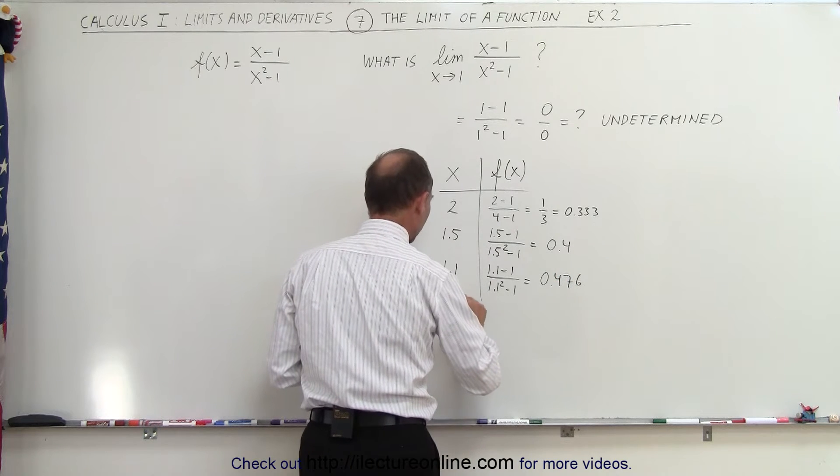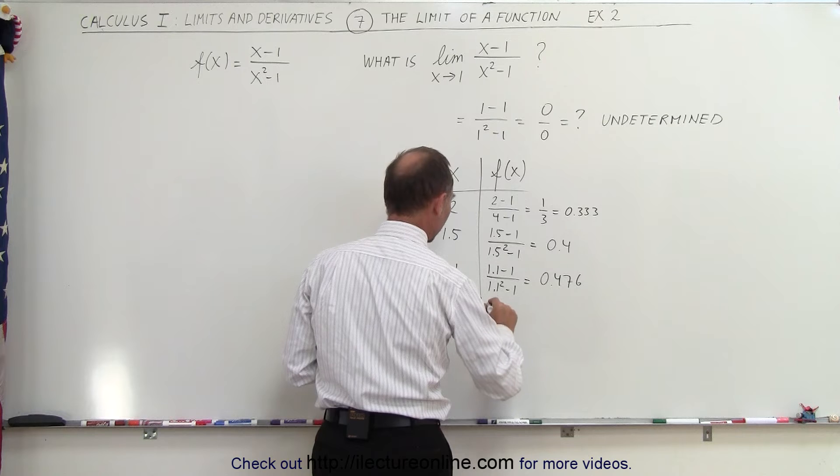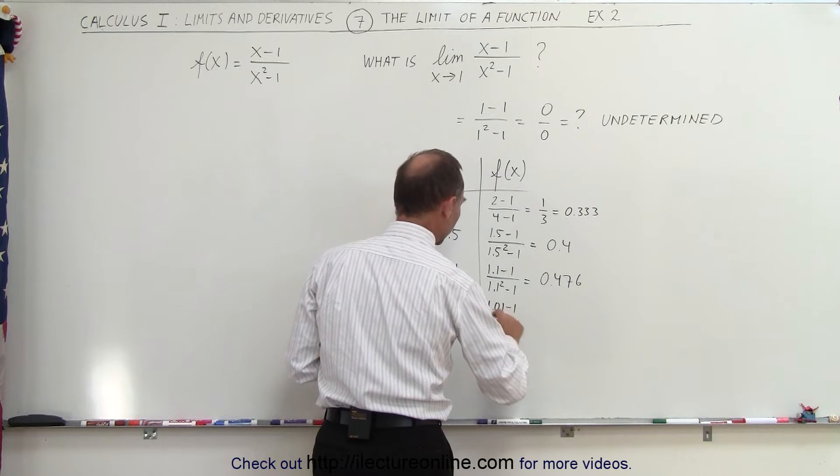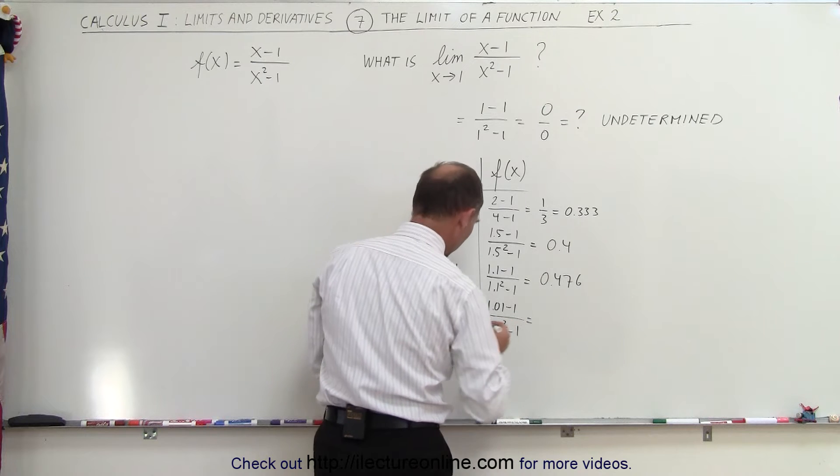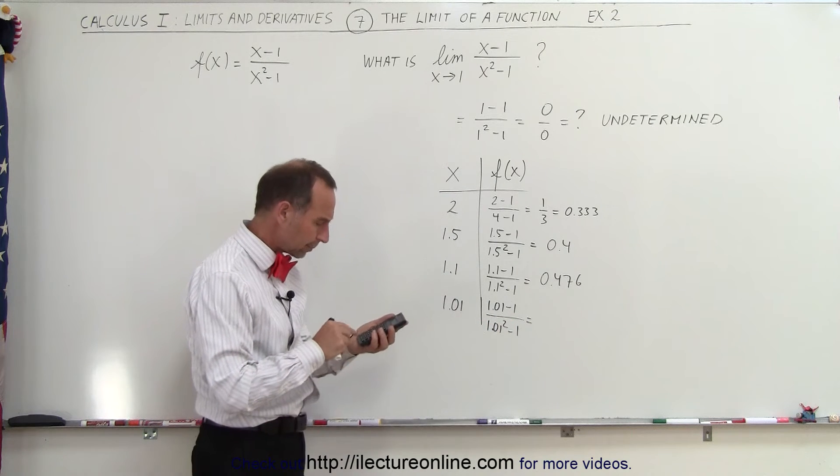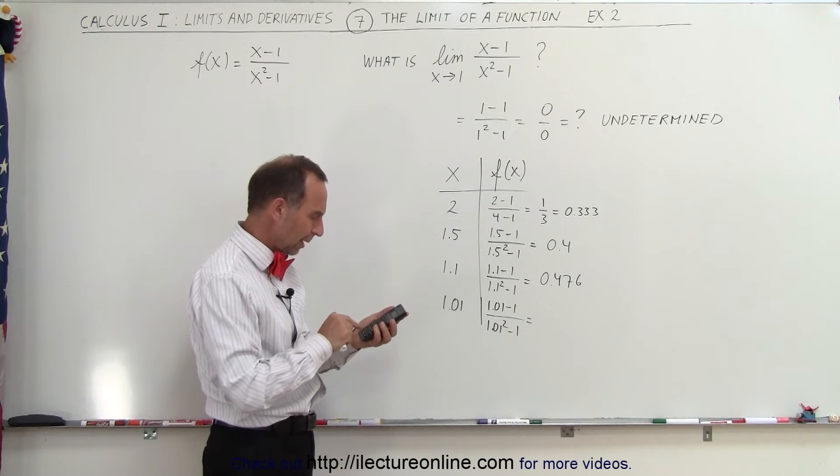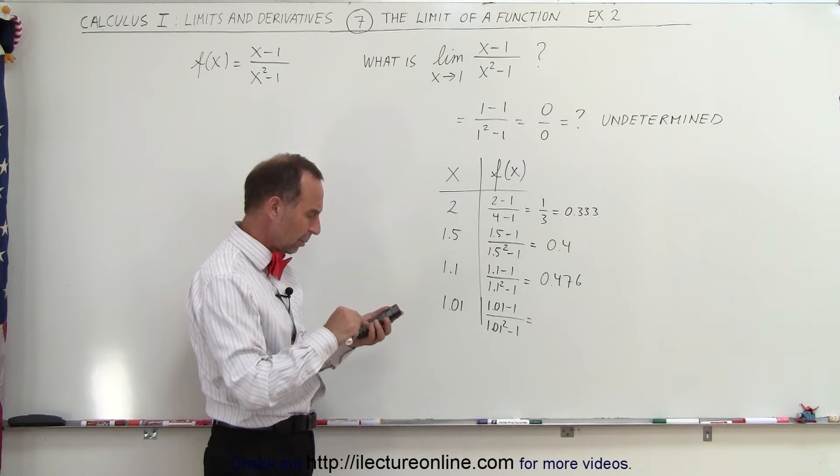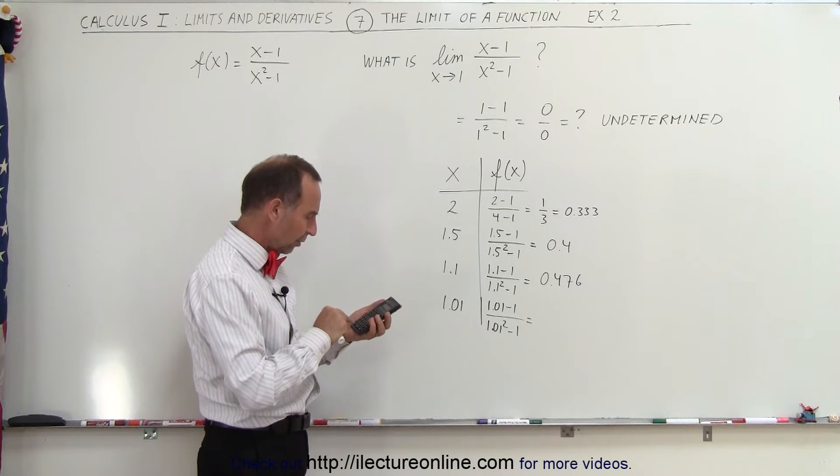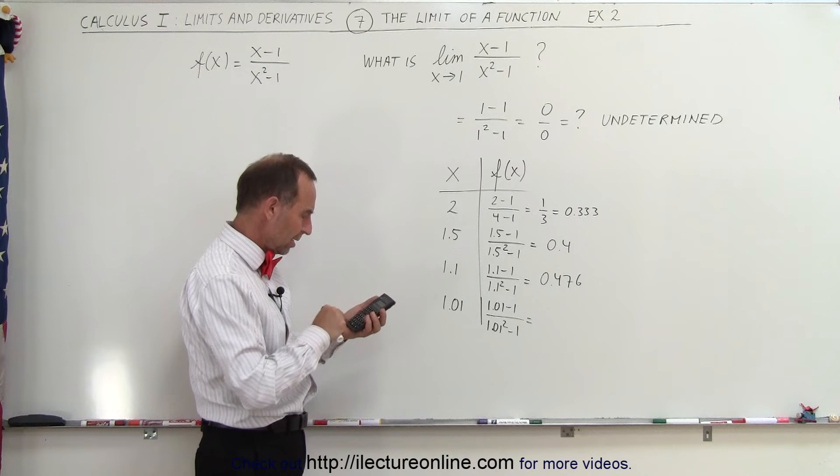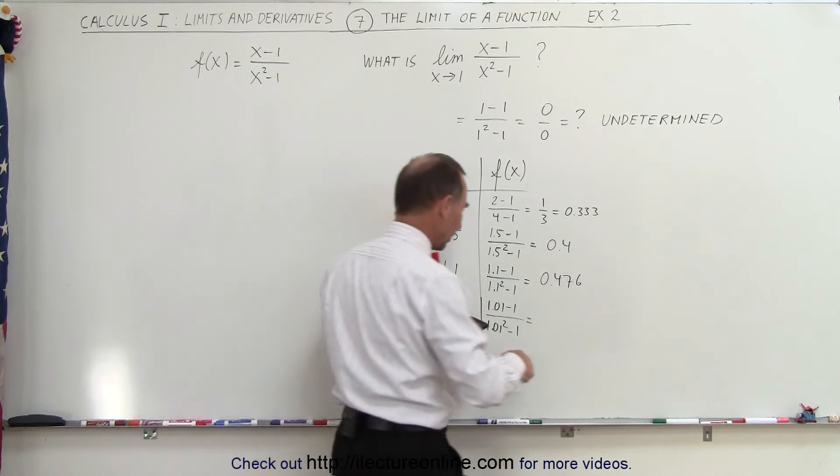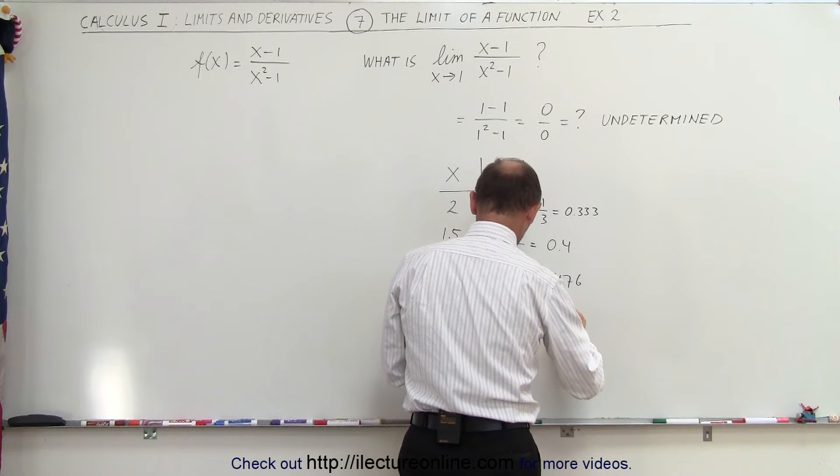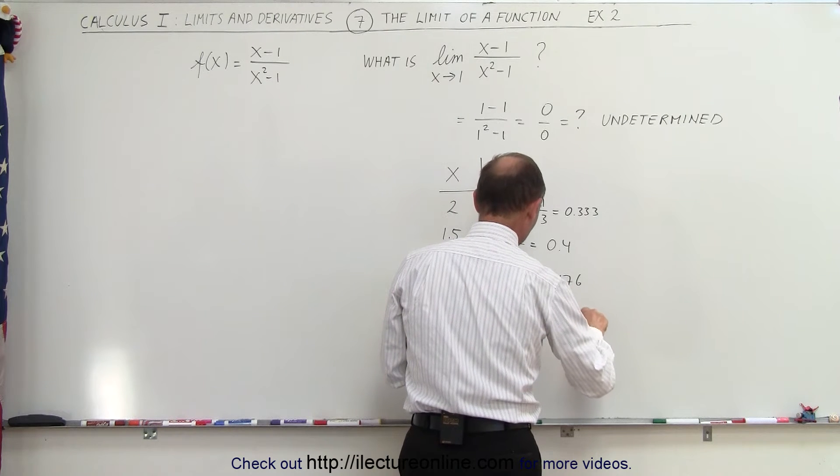How about 1.01? That means f of x would be 1.01 minus 1 divided by 1.01 squared minus 1. And now let's see what we get this time. So 0.01 divided by 1.01 squared, let me try it again. 0.01 divided by the quantity 1.01 squared minus 1 equals, and now we get the value of 0.4975.